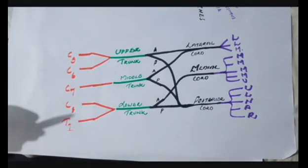The branches from the posterior cords are the upper subscapular nerve, lower subscapular nerve, nerve to latissimus dorsi, axillary nerve and the radial nerve.